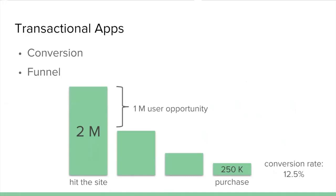Transactional apps are really about conversion — they're about looking at a funnel. If two million users hit the site and after a couple of steps 250,000 make it to the purchase step, the total conversion rate is about 12.5%. A transactional app looks at the gaps — whether it's the one million opportunity between step one and step two, or from the entire TAM all the way down to the purchase, including understanding loop-backs: coming back to the site after a purchase or going viral through referral codes.